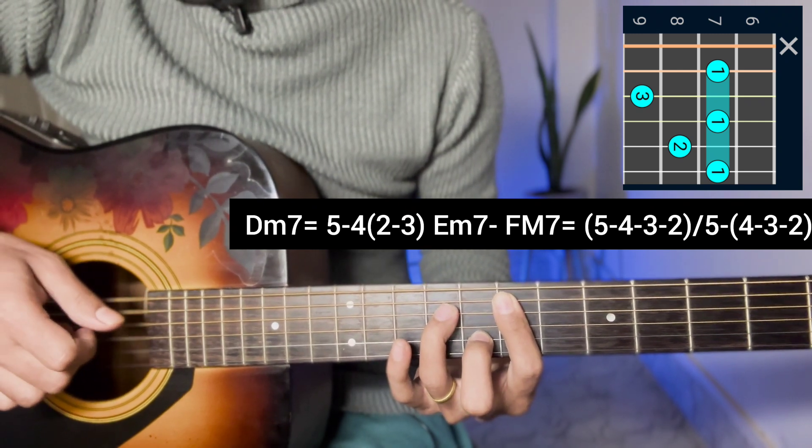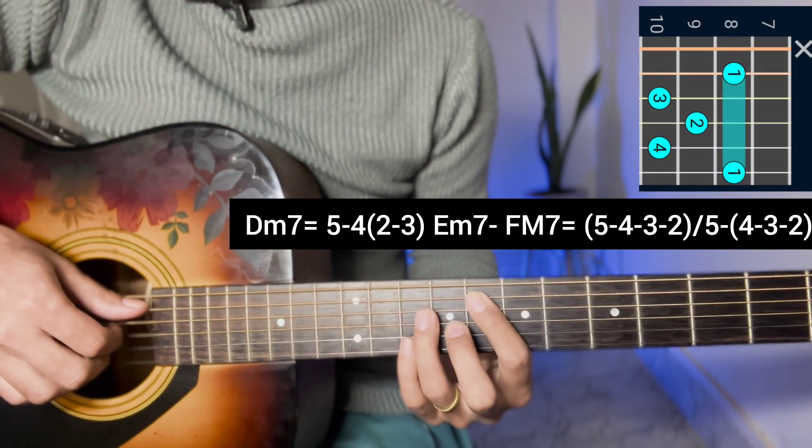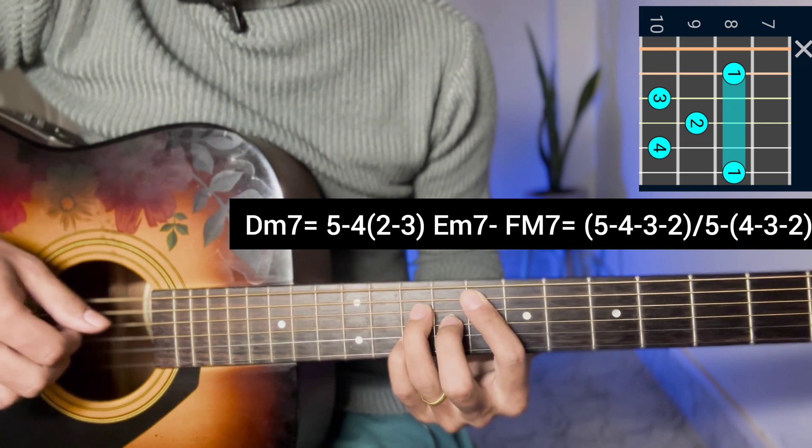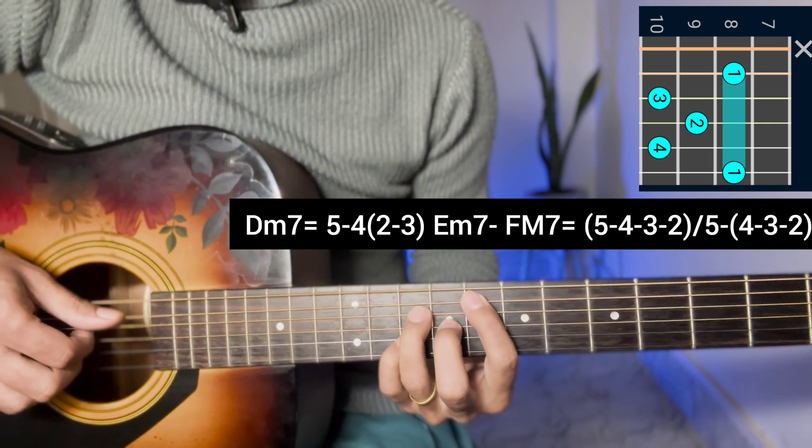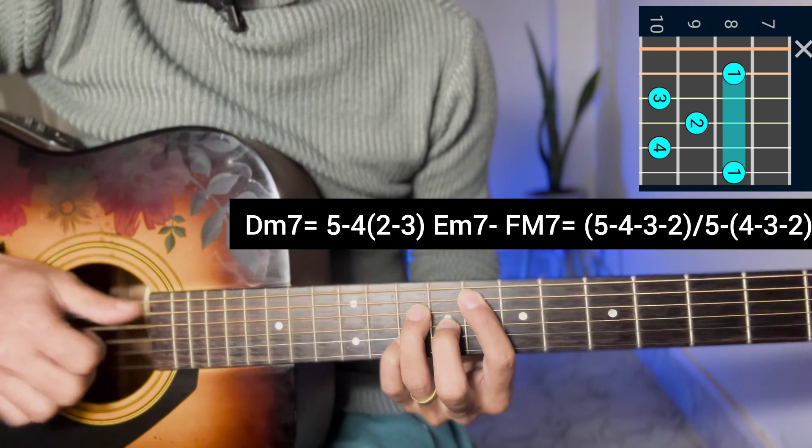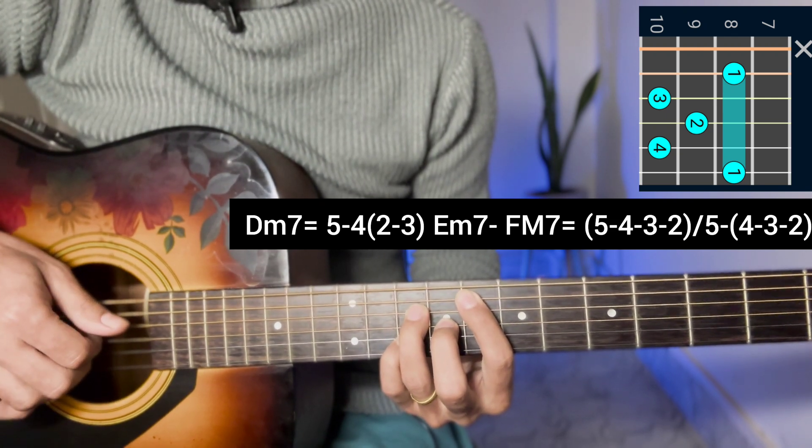If you want to play on the fifth string, this is F major 7 chord. You play 5-4-3-2 and pick. Block 5-4-3-2 and pick.